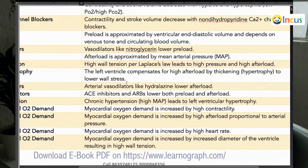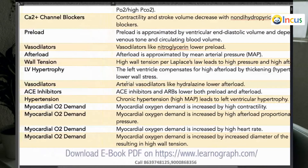Afterload means arterial vasoconstriction, which causes an increase in mean arterial pressure. It is the mean arterial pressure against which the heart pumps blood out into the aorta. That is why afterload is approximated by MAP (mean arterial pressure), while preload is approximated by ventricular end-diastolic volume.